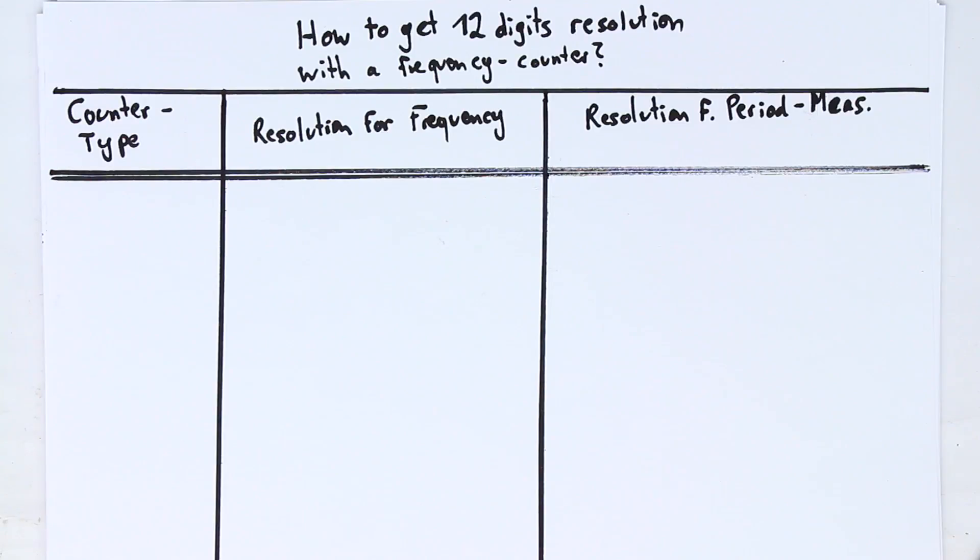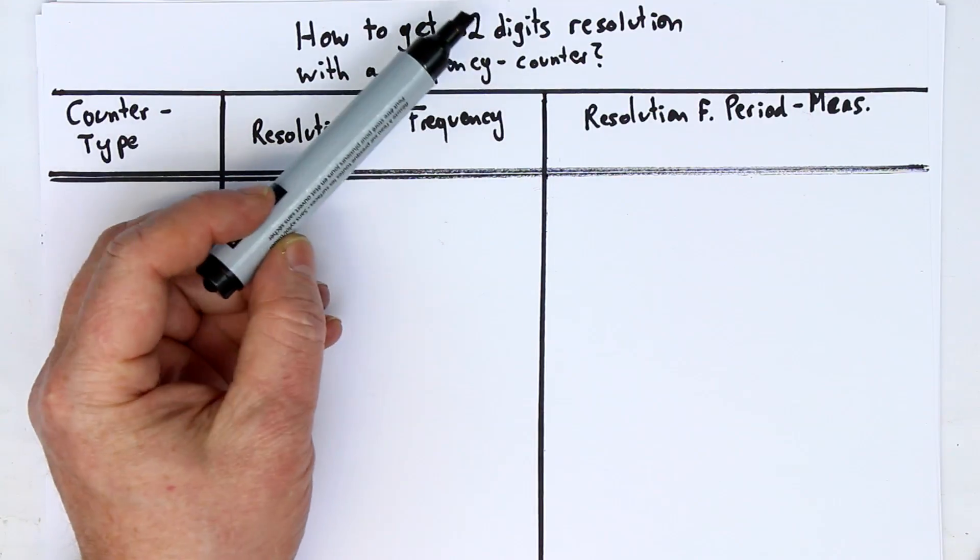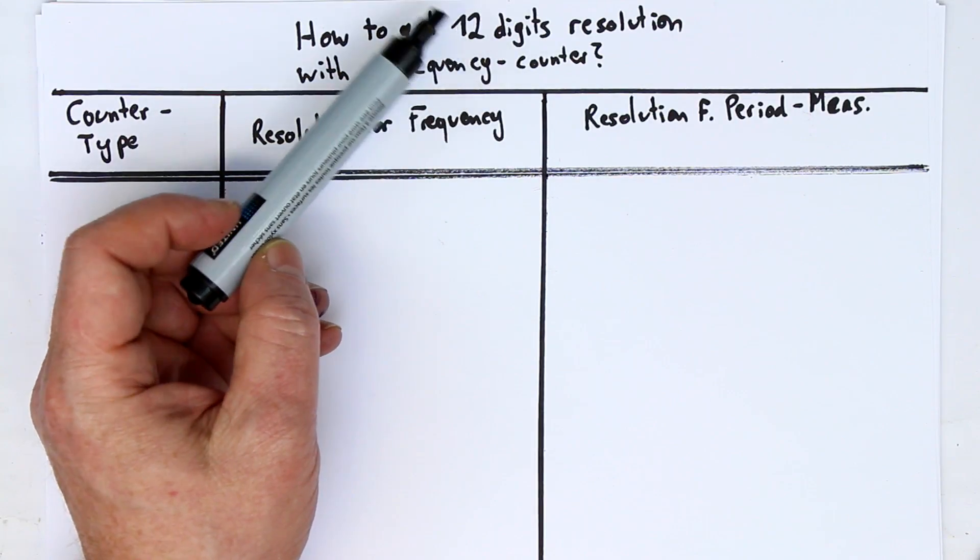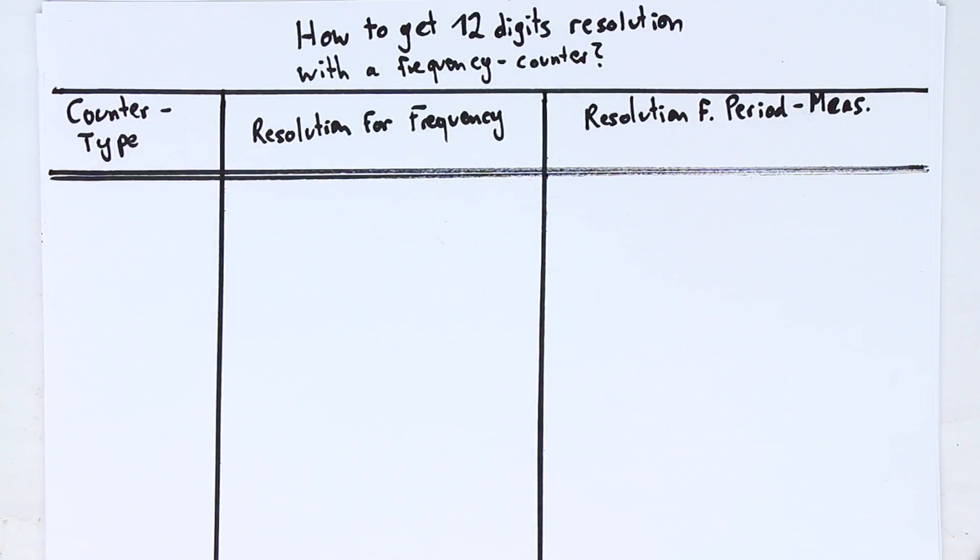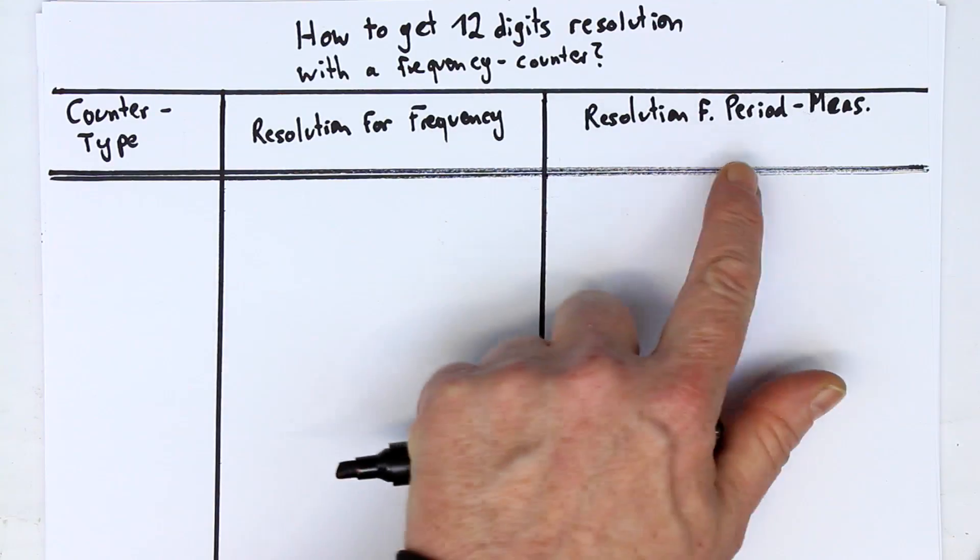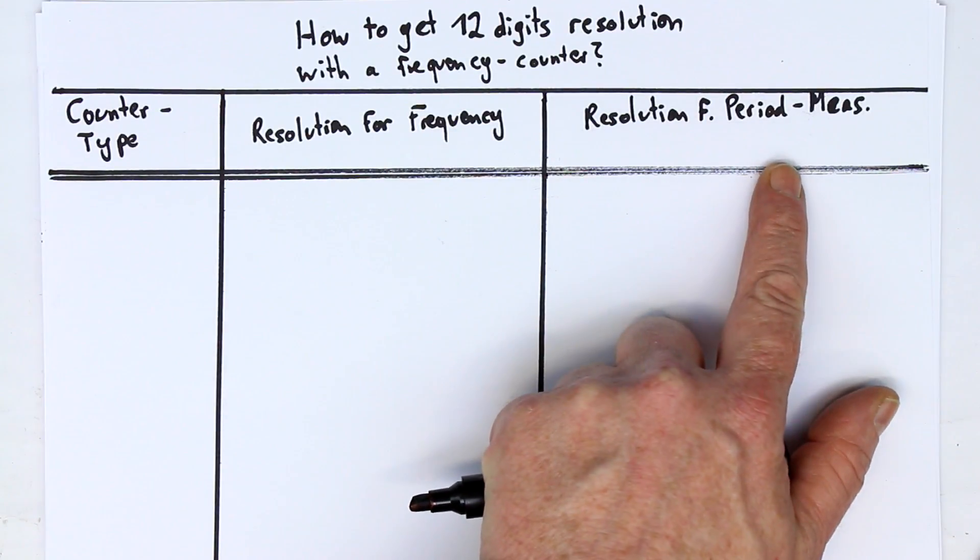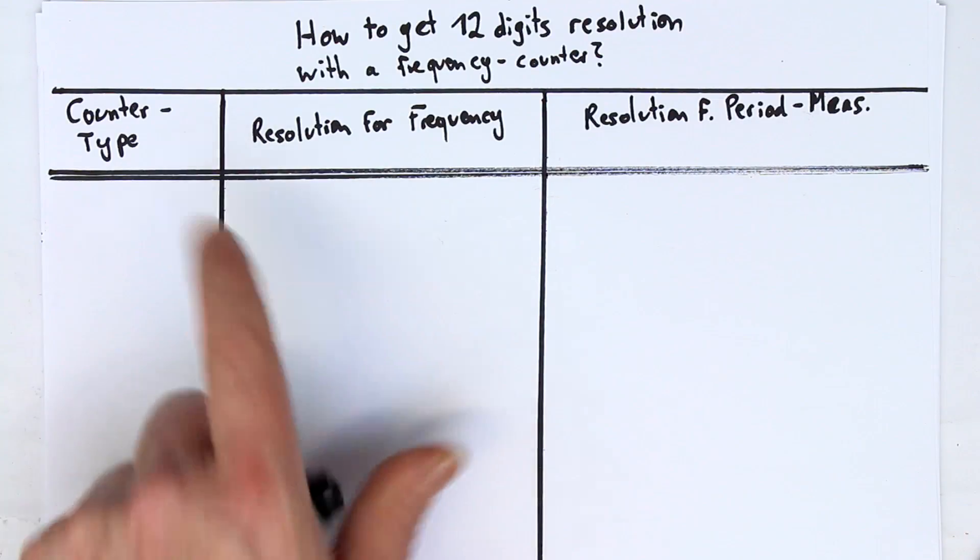If you have ever seen one of those quite expensive HP, Keysight, Agilent, or however they are called in the future, counters which have resolutions up to 12 digits as far as I remember, you might wonder, as I have done, how is it possible to reach such a high resolution? Can this really be accomplished with a reciprocal counter? So let's take a closer look at the resolution distinguished for frequency and period measurement of the three basic counter types.